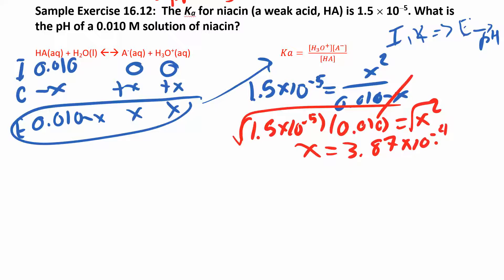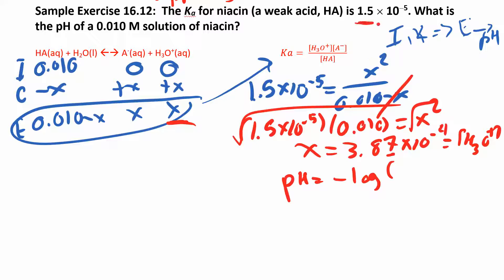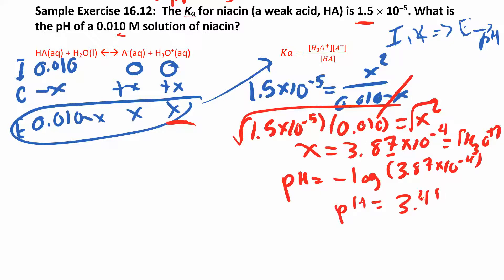That's not our final answer — that is the hydronium concentration. Hydronium is just X, and we're looking for pH. pH is the negative log of that. I carried out one extra sig fig here as a guard digit so I don't over-round. We really only have two sig figs, so my pH ends up being 3.41. With two sig figs, the precision is in the digits after the decimal place. So that's our pH.